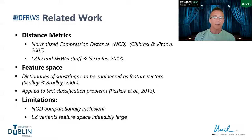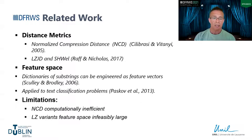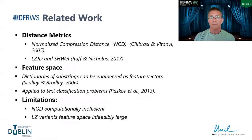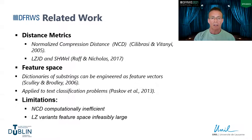In terms of compression as a feature space, there has been work showing that the dictionary produced by algorithms such as the Lempel-Ziv variants can be engineered as feature vectors — that was the case with LZJD and Schwell. The authors used min hashing and feature hashing to convert those substrings into features that could be used for classification. The LZ algorithm has also been used for text classification problems.